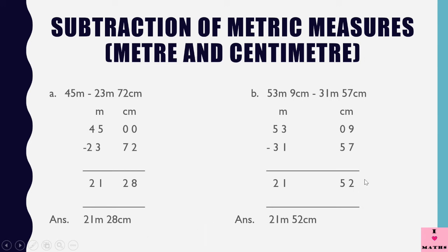Same way, see here. 9 minus 7 is 2. Now this 0 will borrow, so it becomes 10 minus 5 is 5. 2 minus 1 is 1. And 5 minus 3 is 2. So this is 21 meters and 52 centimeters.